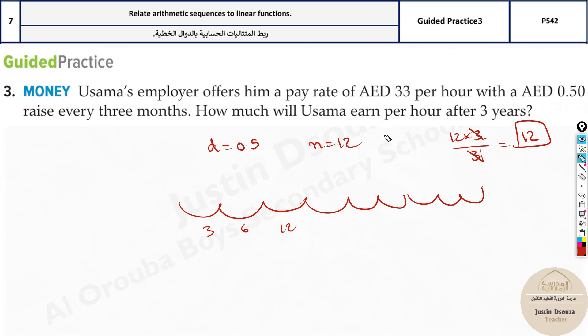Sorry. So if you count, you will have 12 three-month periods in 3 years. That is the thing. So there will be 12 times increase in the salary for Usama.